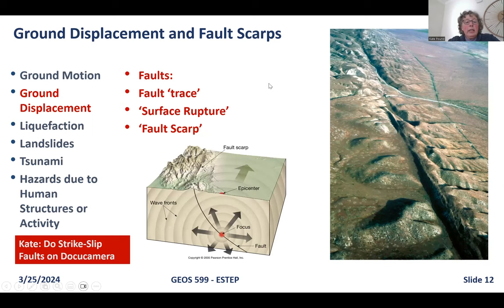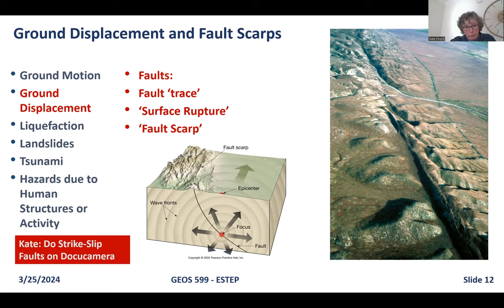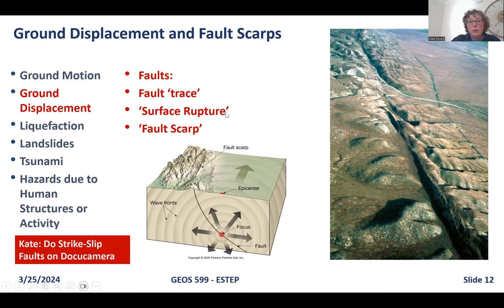Here we're looking at the San Andreas fault from the air — again, a fault scarp. There are a couple of terms for when a fault reaches the surface: fault trace and surface rupture. Faults don't always reach the land surface — they may die out somewhere below — so having a surface rupture, like we saw in the Idaho example, means that fault has actually broken through to the surface.